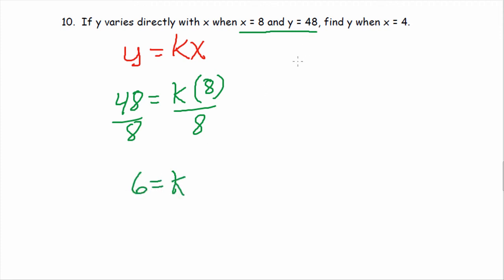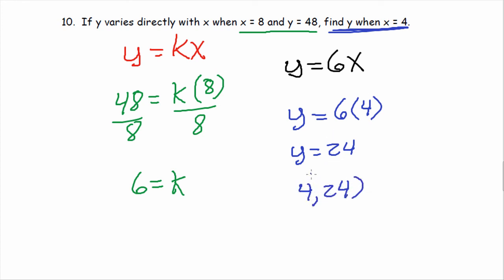Now we know our direct variation equation is y equals 6x, because we just found k to be six. Now, we use the second bit of information to find what they want us to find. Find y when x is four. So, we're going to take four for x, plug it in. y equals six times four, so y equals 24. When x is four, y is 24. That's it for those examples.